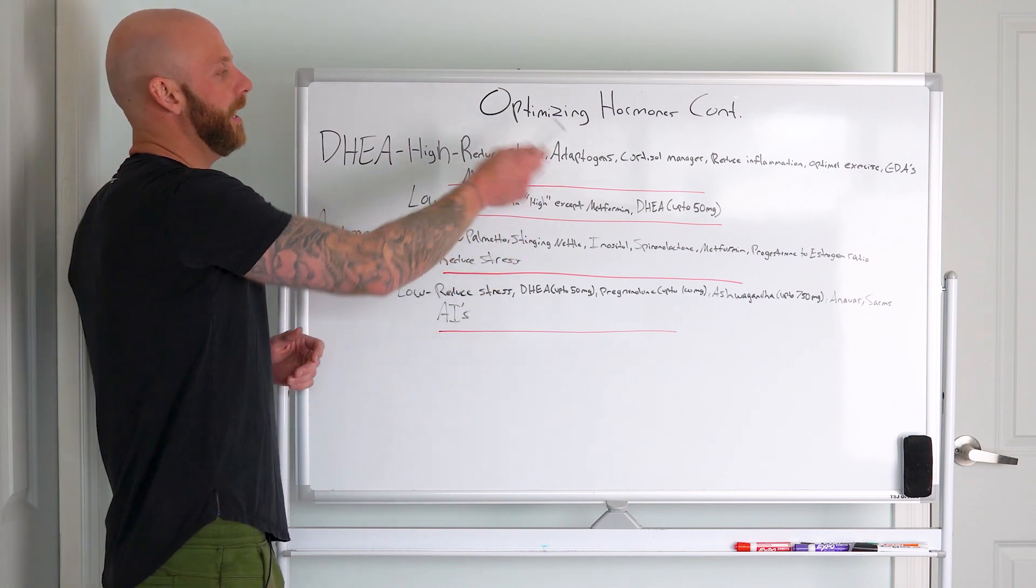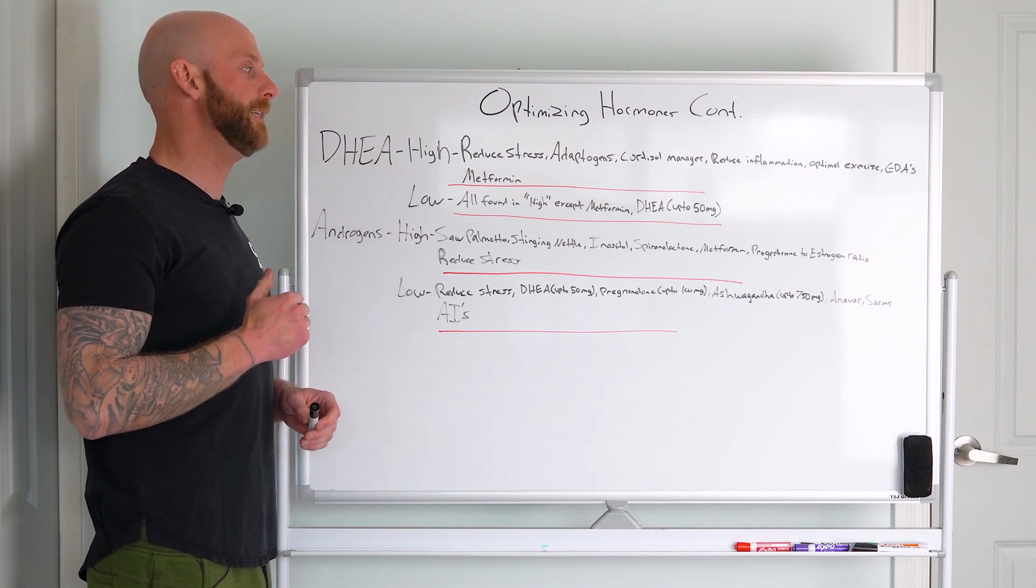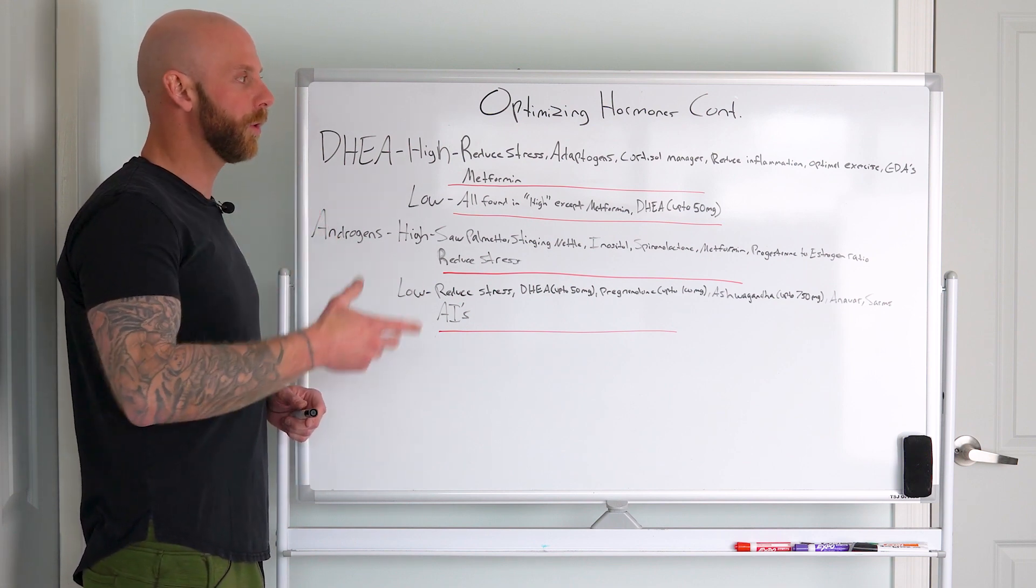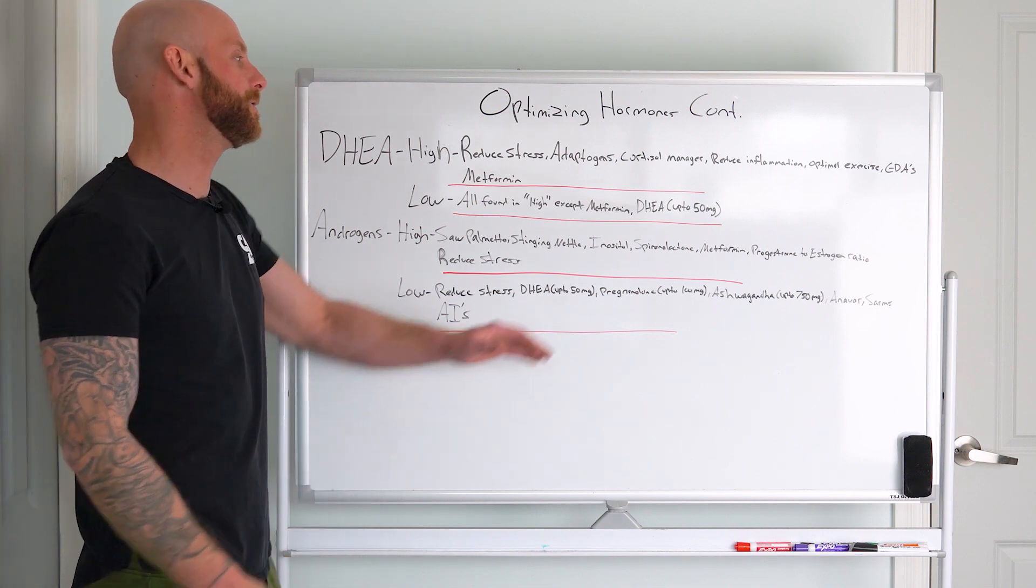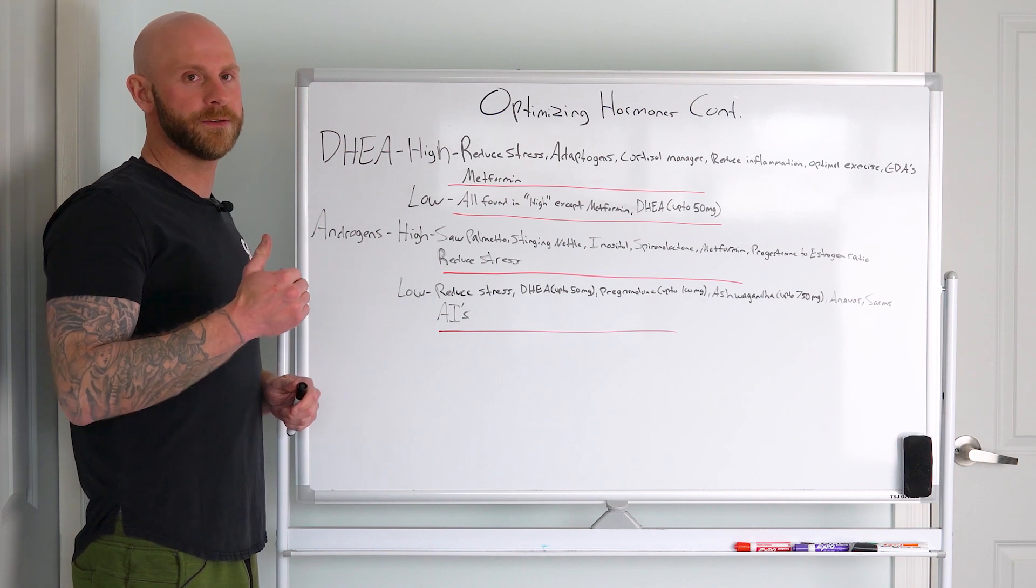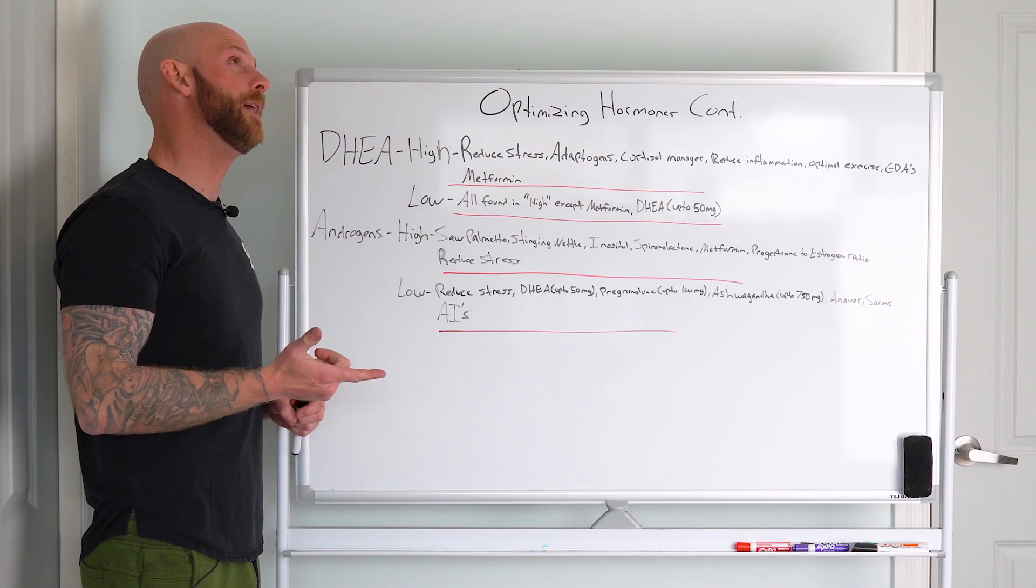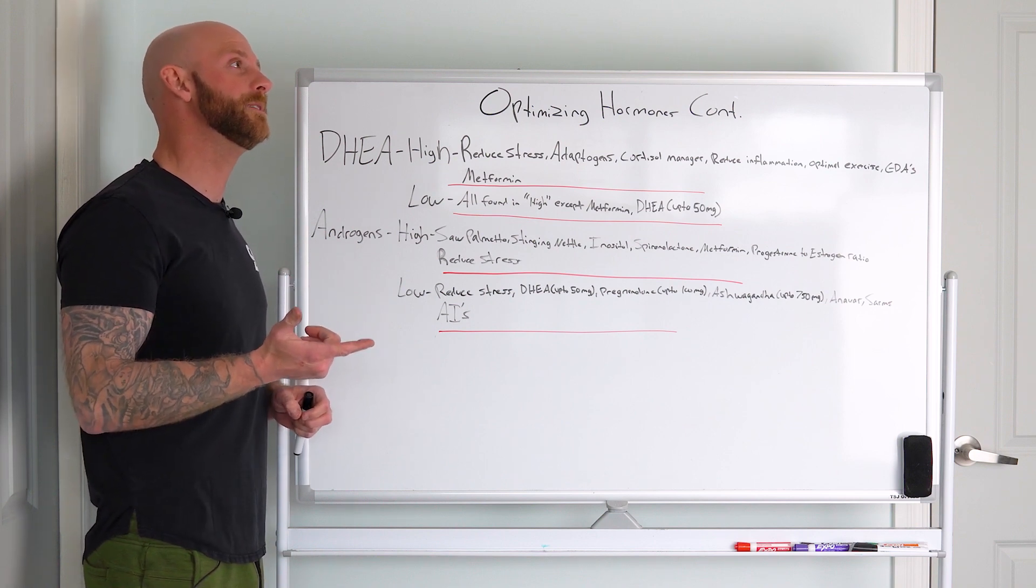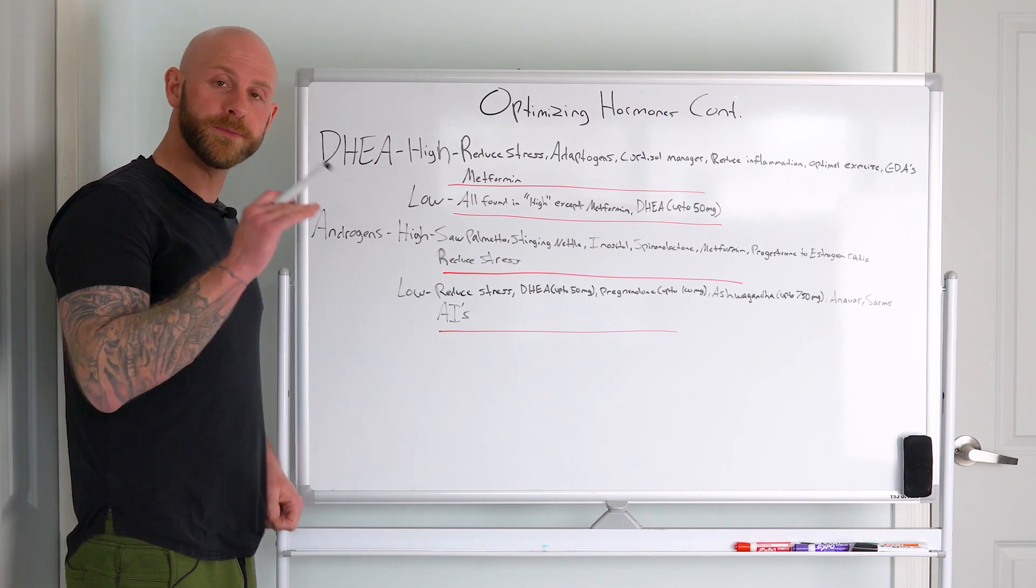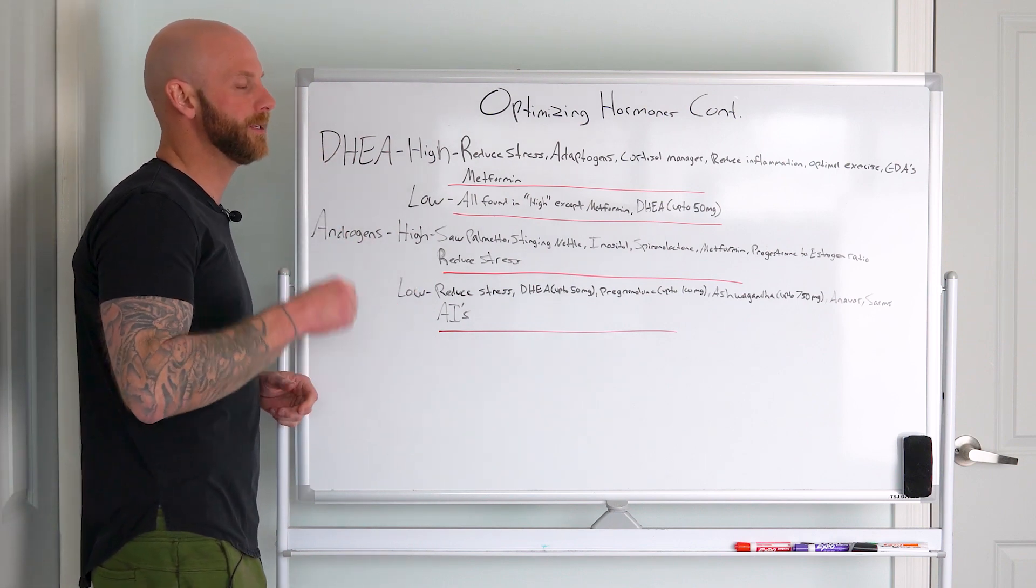Adaptogens can help as we mentioned, because high levels of cortisol can also result in high DHEA. So ashwagandha, relora, things like that can really help - that'll be more in your cortisol manager. I discussed that in a previous hormone video - Cortisol Pro from Thorne, Cortisol Manager from some company on Amazon, and Cortease from Nutrition Dynamics. Those would be good for lowering cortisol levels, so that could help reduce your DHEA if you are in that scenario.